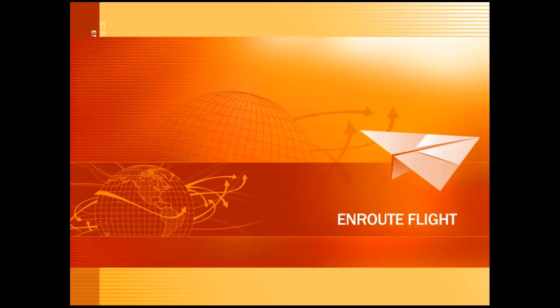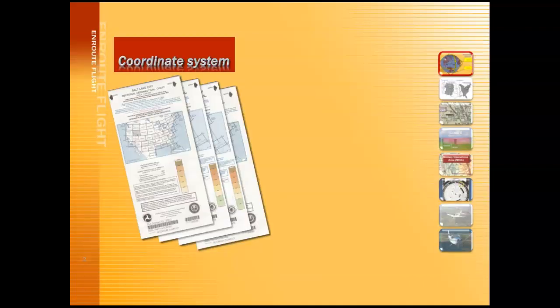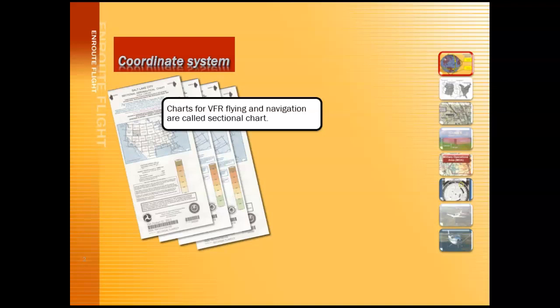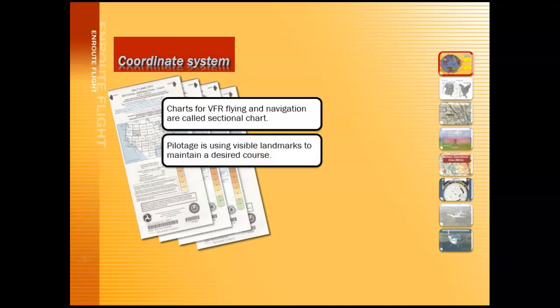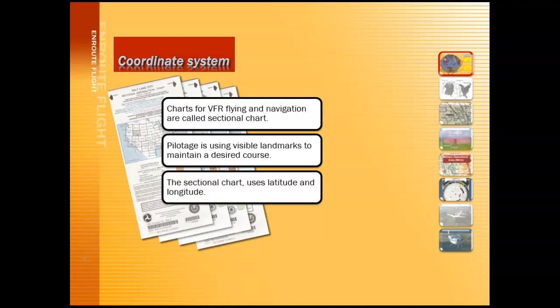Welcome to Arrow 2230, ProPilot 1, presentation number 7 on flight planning. In this presentation, we'll discuss sectional charts and how sectional charts are used for navigation and VFR flight planning. We'll discuss pilotage, which is using visible landmarks to navigate, and we'll discuss lines of latitude and longitude pictured on the sectional chart.